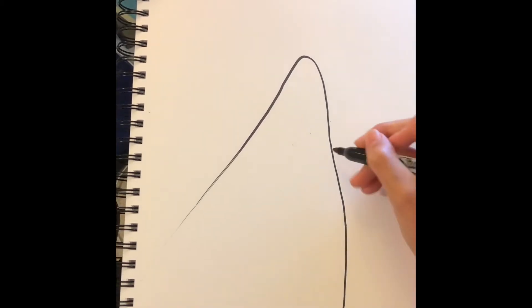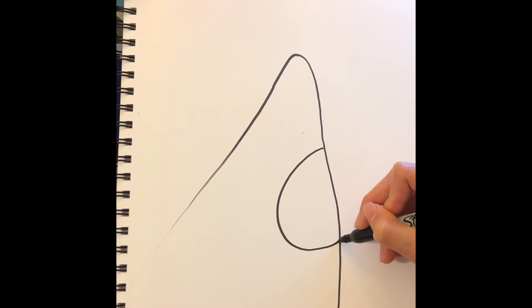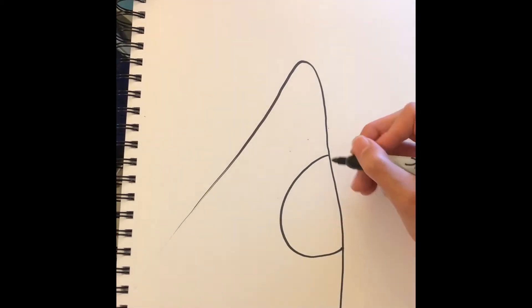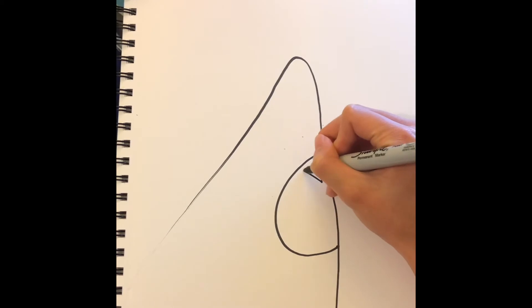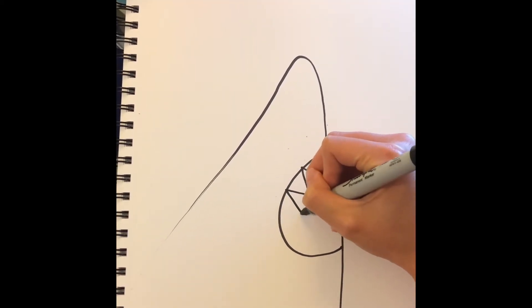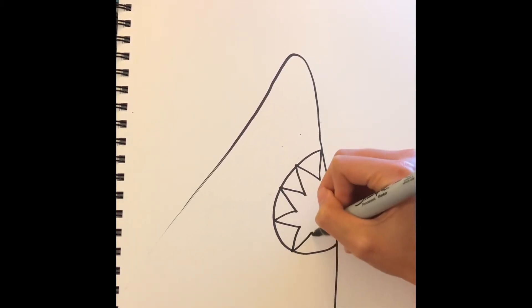After we have that done, we're going to add his mouth. His mouth is a round semicircle. Make sure it's big enough because we're going to add teeth. Shark's teeth are very sharp. So we're going to add a lot of these big triangle shapes around the mouth. And you can add as many as you want. I just added a few around the mouth.